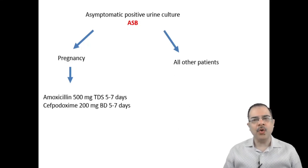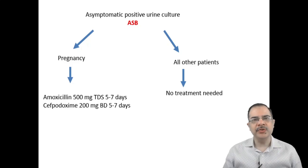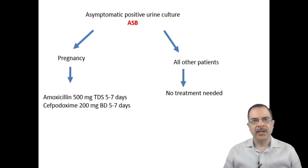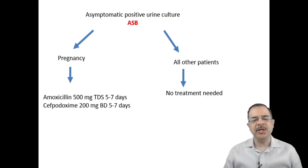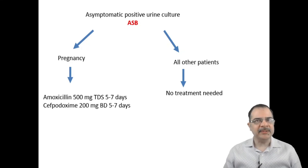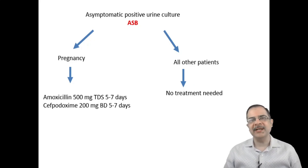Asymptomatic bacteriuria will be treated only in pregnancy. In all other patients, absolutely no treatment is needed for asymptomatic cases. This is the summary of urinary tract infection, their definitions, and how to approach each case. If you have any questions or doubts, you can put them in the comments section. Thank you.